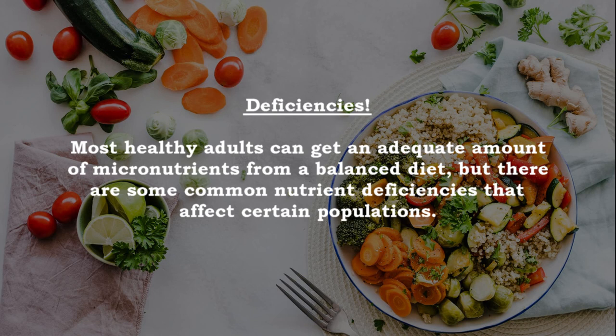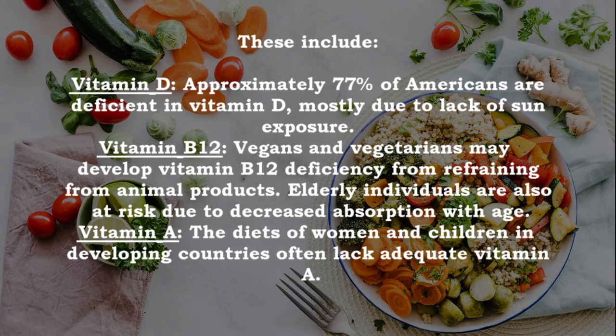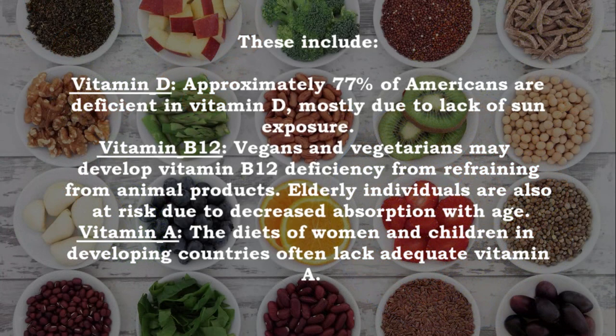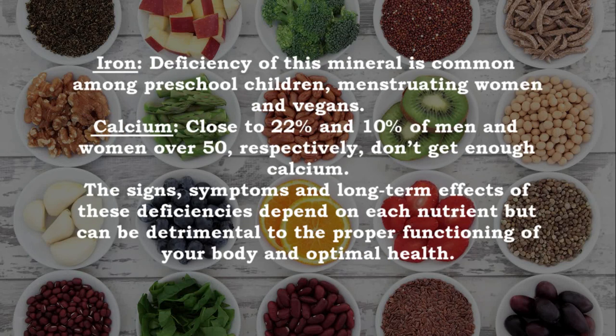Most healthy adults can get an adequate amount of micronutrients from a balanced diet, but there are some common nutrient deficiencies that affect certain populations. Vitamin D: approximately 77% of Americans are deficient, mostly due to lack of sun exposure. Vitamin B12: vegans and vegetarians may develop deficiency from refraining from animal products; elderly individuals are also at risk due to decreased absorption with age. Vitamin A: the diets of women and children in developing countries often lack adequate vitamin A. Iron: deficiency is common among preschool children, menstruating women, and vegans.